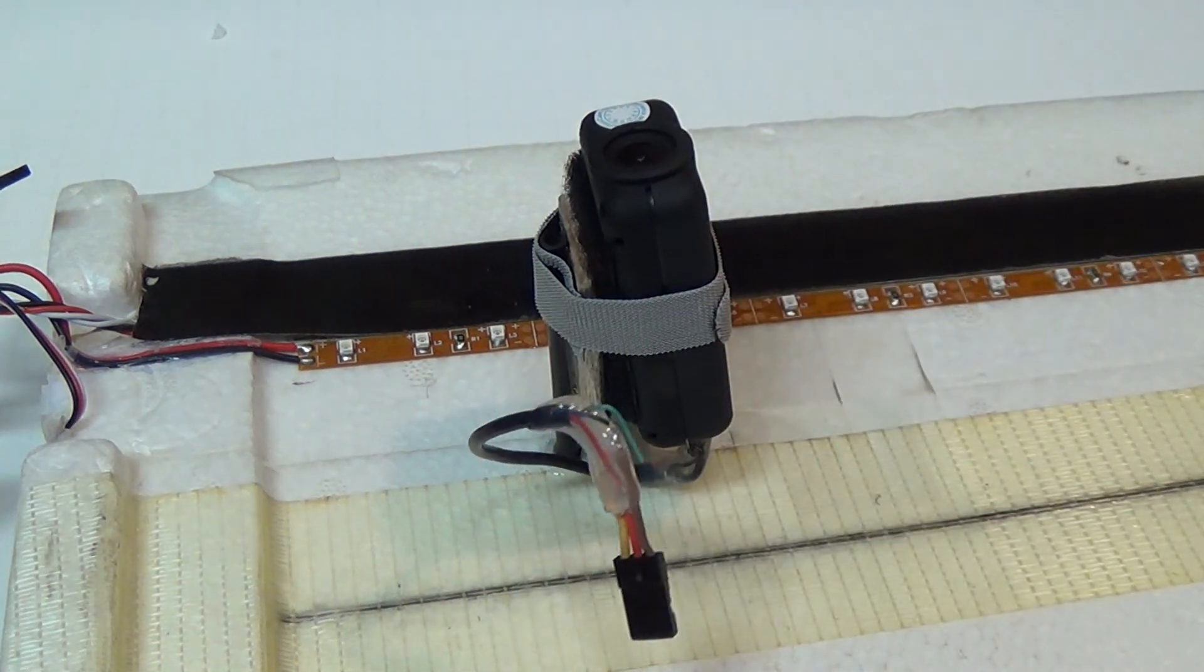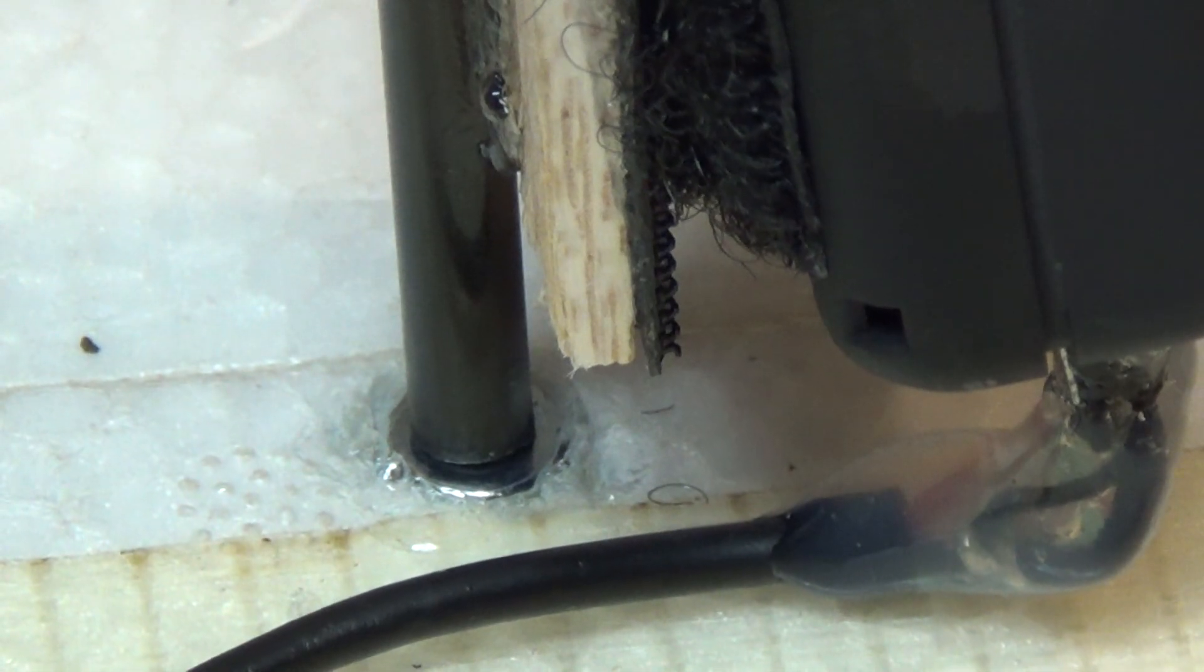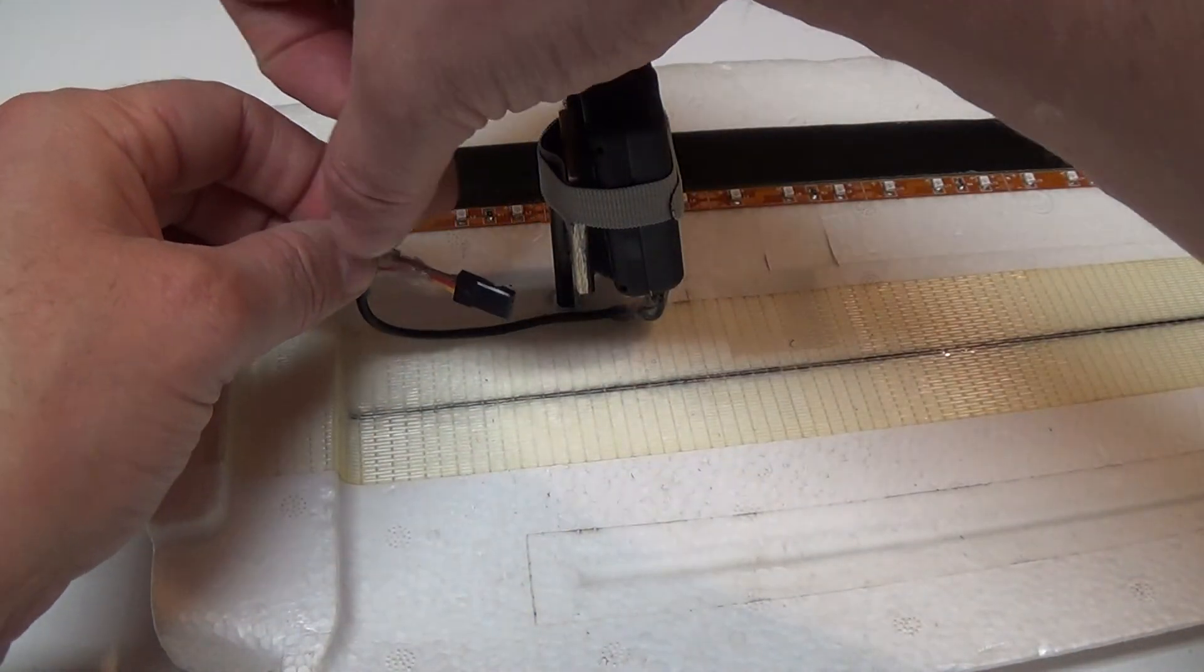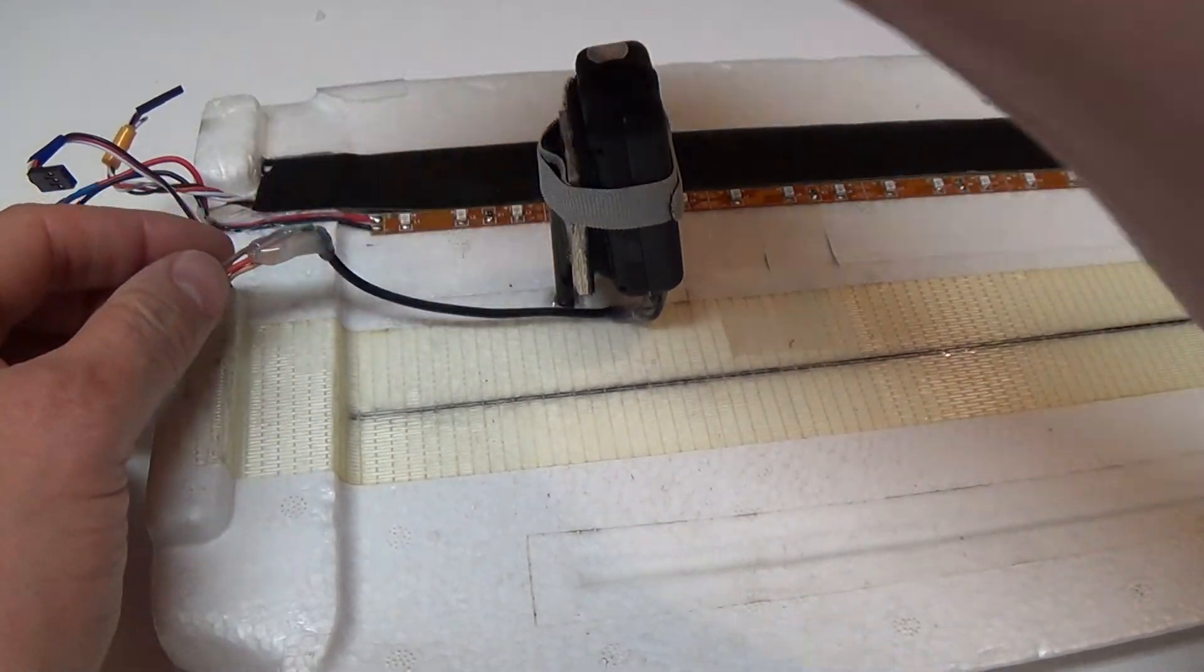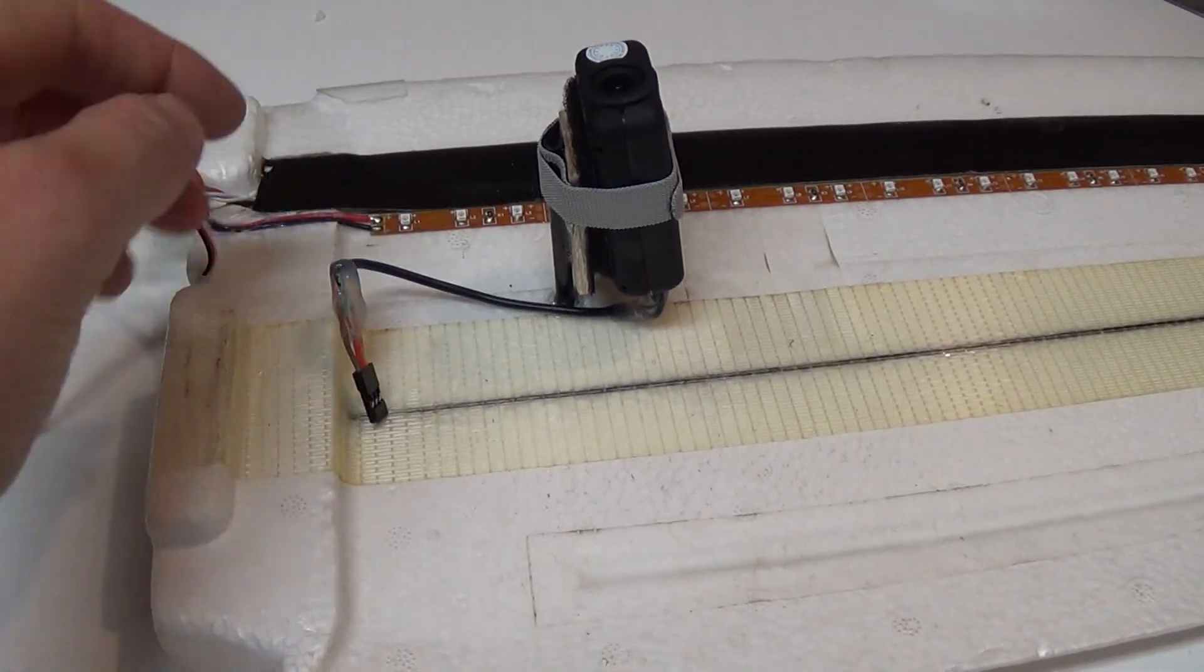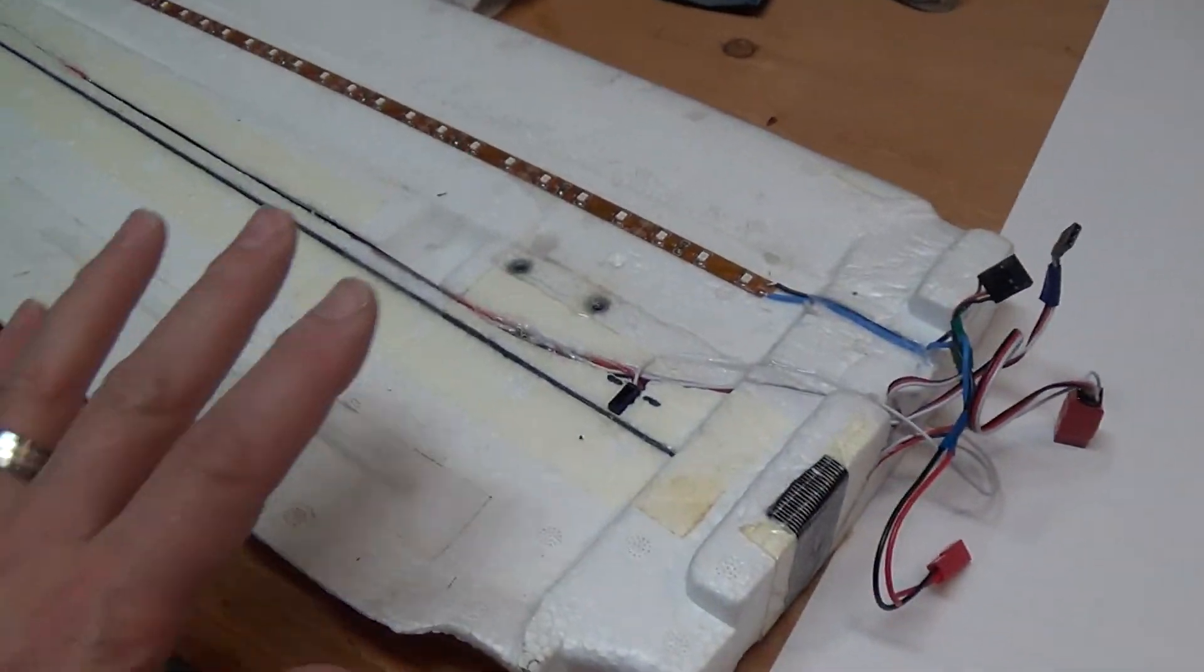Now you can either run the wiring between the wing and the fuselage like I did at first or you can hardwire a lead into the wing so that all you have to do is plug it in. For the next part of this video I will show you how to install and run the hard wiring.